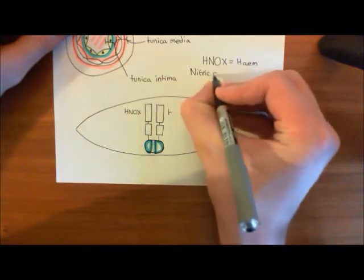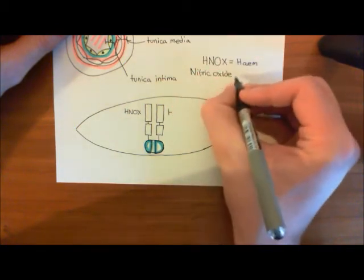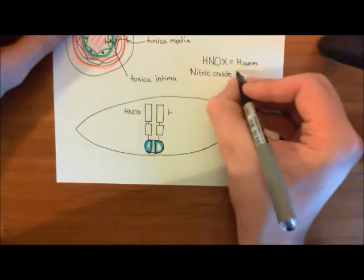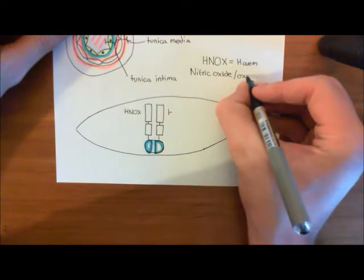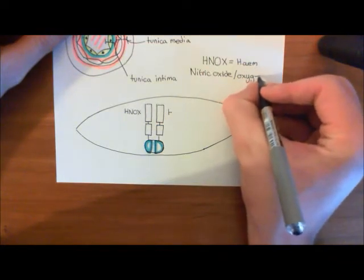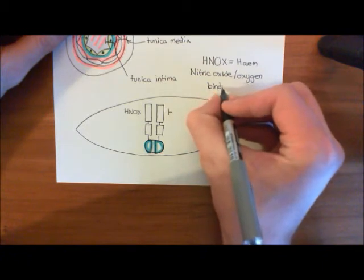HNOX stands for heme nitric oxide slash oxygen binding domain. So, heme nitric oxide slash oxygen binding domain. So, they took the H for heme, they took the NO for nitric oxide, they took the N for nitric oxide, and then the ox for oxygen. Oxygen binding domain.